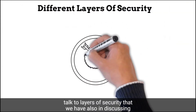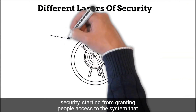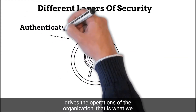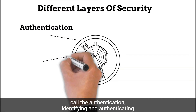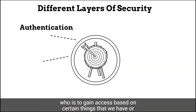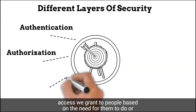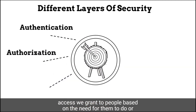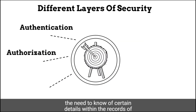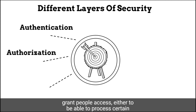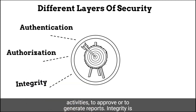We talk to layers of security, starting from granting people access to the system that drives the operations of the organization — that is what we call authentication. Identifying and authenticating who is to gain access is based on certain things that we have or information that we know. Authorization refers to the access we grant to people based on the need to know certain details within the records of the organization and how we should grant people access, whether to process certain activities, to approve, or to generate reports.